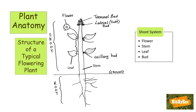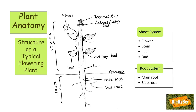The organs in the root system are: the main root, which emerged originally from the seed, and the side roots. So in a nutshell, the organs in the root system are the main root and the side roots.